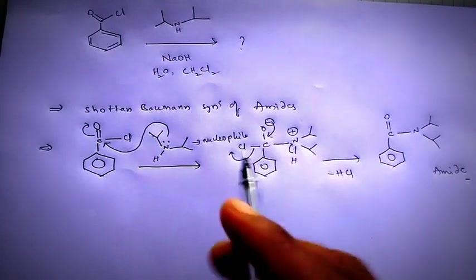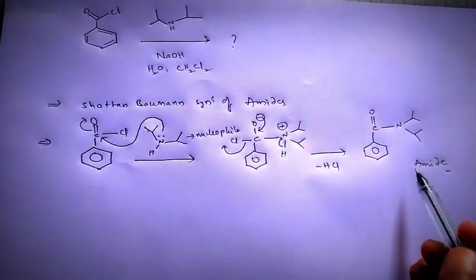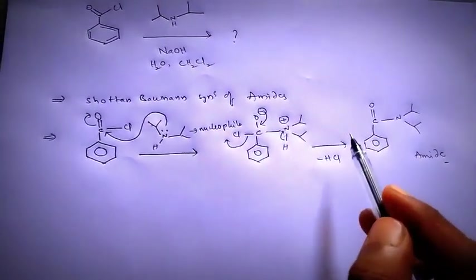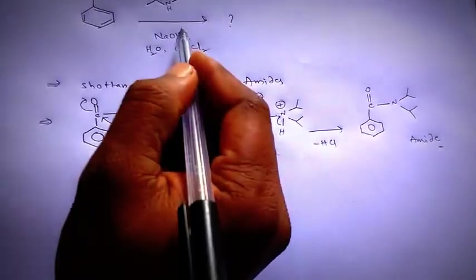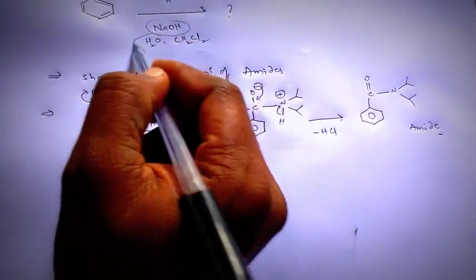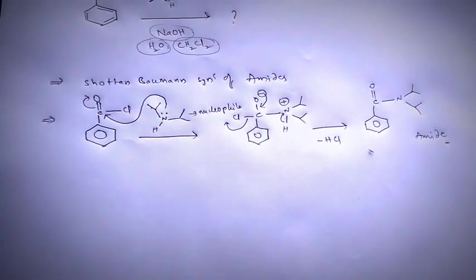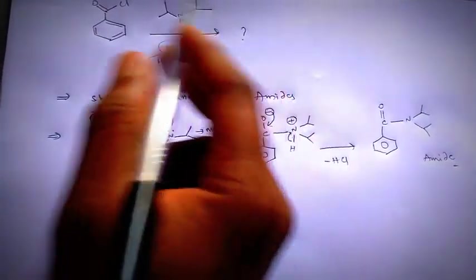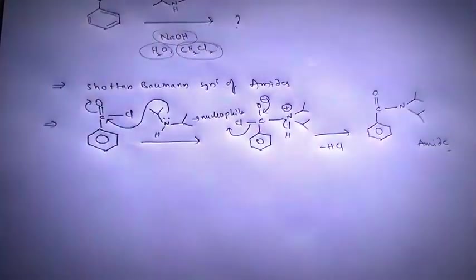It is easy. So one can do this mechanism and give this product. Then what is the use of NaOH, water and dichloromethane? So now I am going to explain the total reaction conditions.